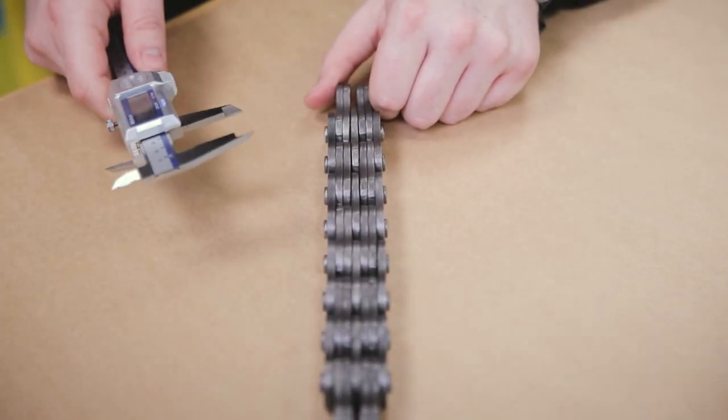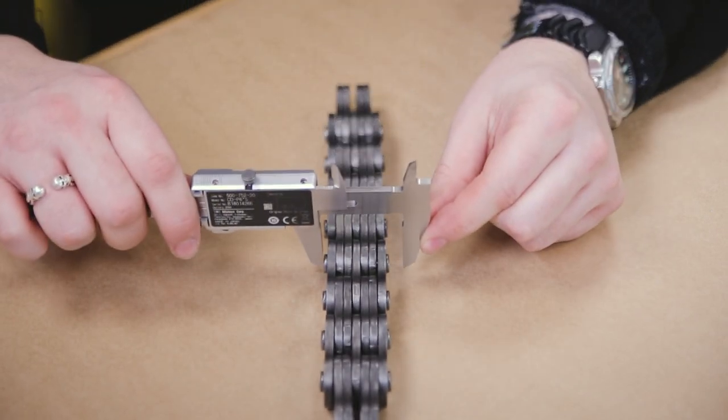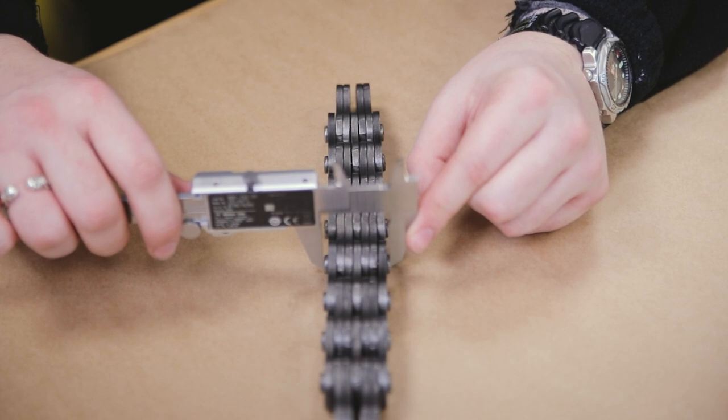The next key dimension is the rivet pin. This is easily taken, basically the width of the chain, but from the end of one rivet pin to the end of the other.